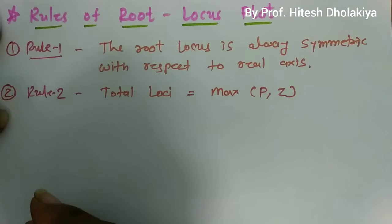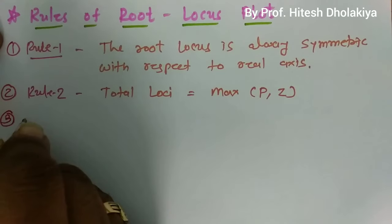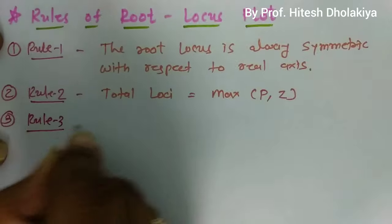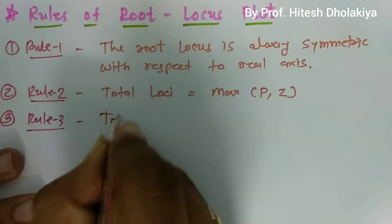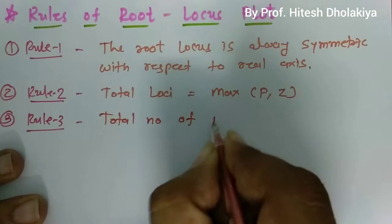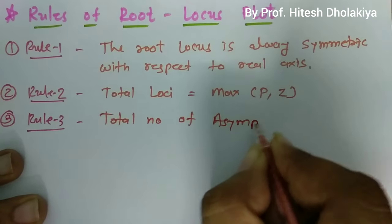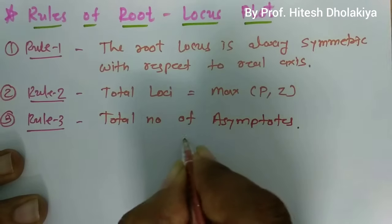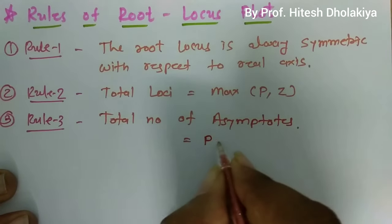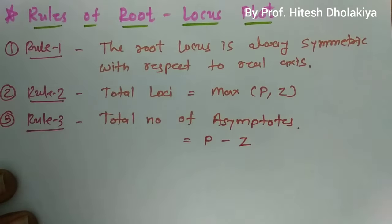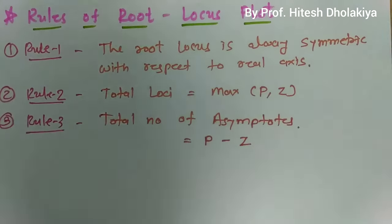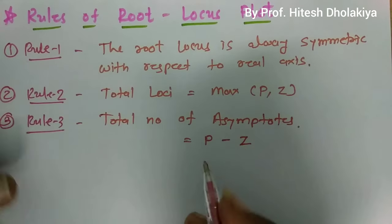The third rule is to calculate the number of asymptotes. The total number of asymptotes equals the total number of poles minus the total number of zeros. For example, if the transfer function has 3 poles and 1 zero, then the total number of asymptotes will be 3 minus 1, which equals 2.